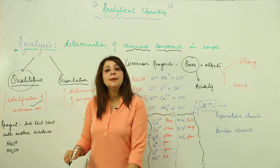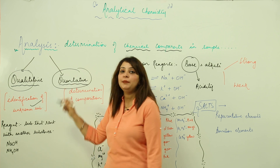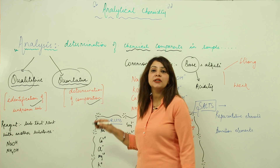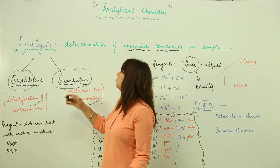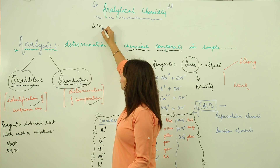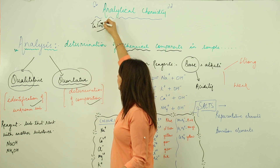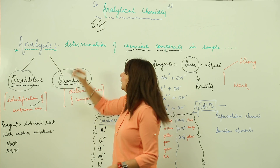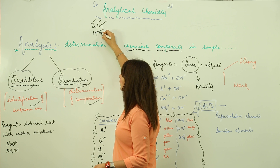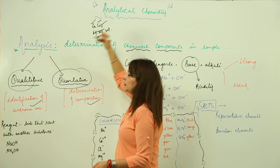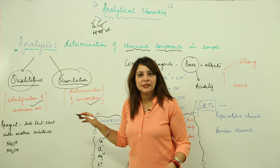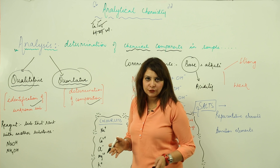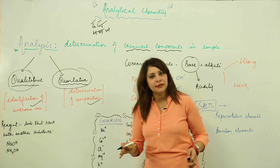The second type of analysis is quantitative. Quantitative means quantity — we want to know the exact composition of the substances. For example, if I have CuSO4 (copper sulfate) and I say it is formed of copper, sulfur, and oxygen, that is qualitative analysis. But when I refer to the exact percentage — like copper is 60%, sulfur 20%, oxygen 20% — that refers to quantitative analysis, determining the exact percentage composition of a substance.